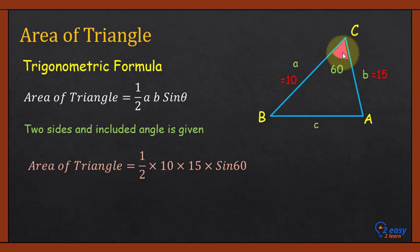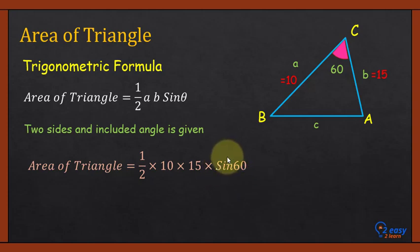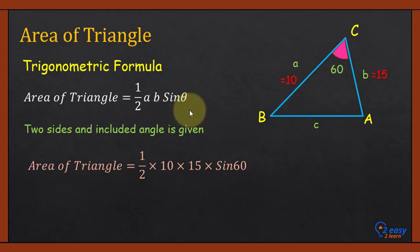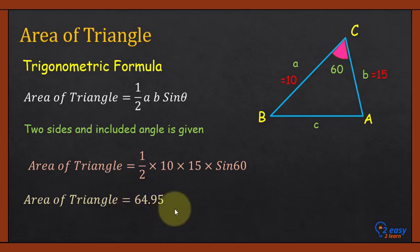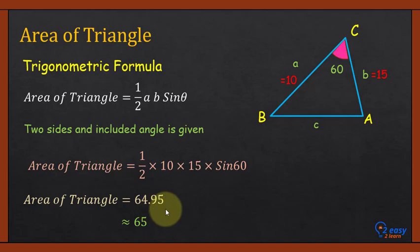Let's plug in the values: Area = 1/2 × 10 × 15 × sine 60°. An important precaution: always use sine — never cosine or tangent — in this formula. Students sometimes forget and use cosine or tan, which is absolutely wrong. Using a calculator, the area of the triangle is 64.95. Rounded to three significant figures: the third significant figure is 9, and the next digit is 5, so 9 rounds up to 10, carrying over to give a final answer of 65 units².